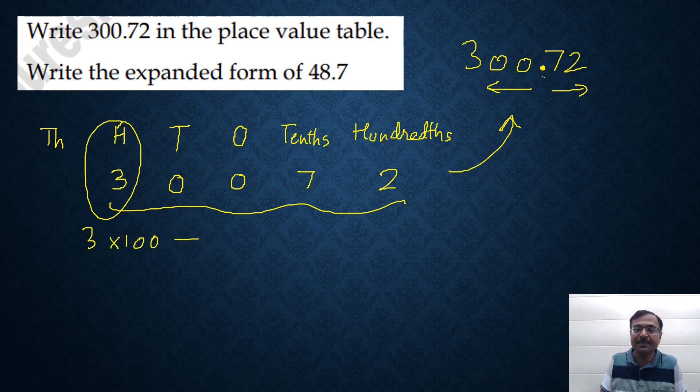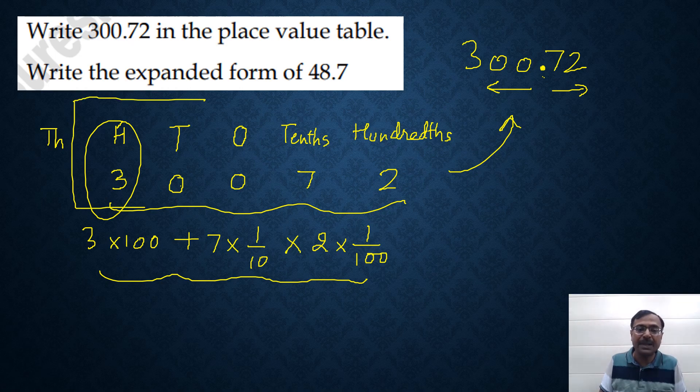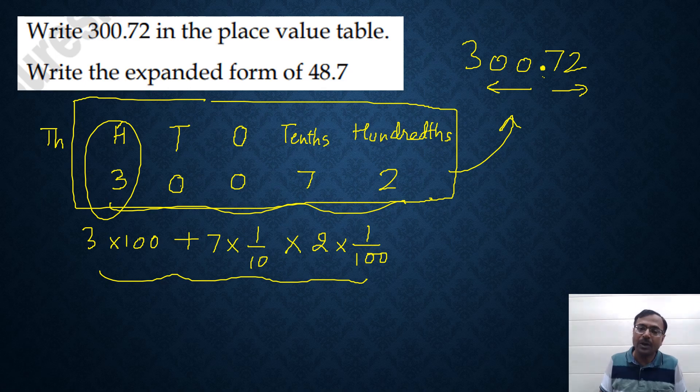So, 3 into 100 plus 0 into 10, you don't need to write 0 into 10. And 0 into 1, you don't need to write that also. Seven tenths. So, 7 into 1 by 10. And hundredths, that means 2 into 1 by 100. Now, this is the expanded form of this decimal, which is represented in this place value table like this.